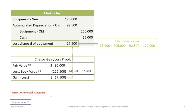We can prove this loss: the fair value of the old asset Chekhov is giving up is $95,000, less the book value of $112,500, leaving a net loss of $17,500 on the exchange.